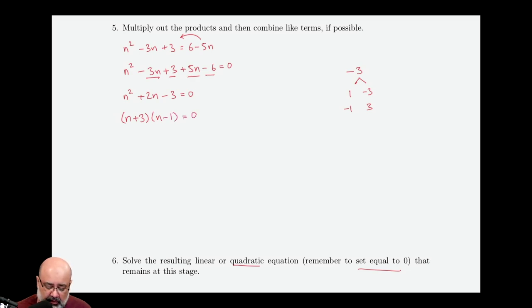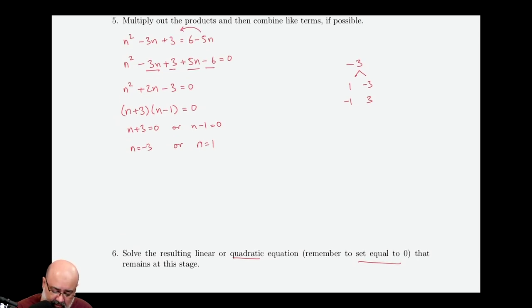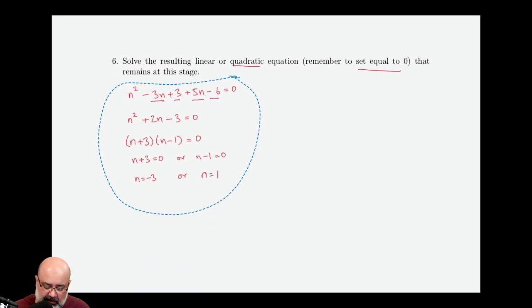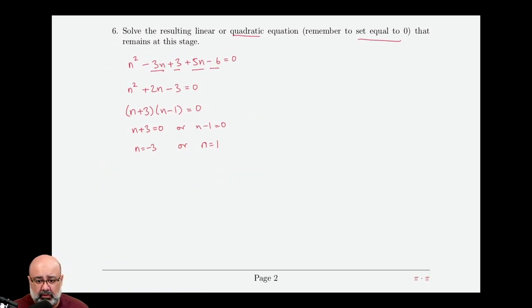So the factorization of this would be n plus 3 times n minus 1 equals 0. Now we can invoke the zero product property because we have a 0 on one side and a product on the other side. Which means either n plus 3 must equal 0 or n minus 1 must equal 0. Which is to say n can be either negative 3 or n can be 1. So these are the potential solutions.